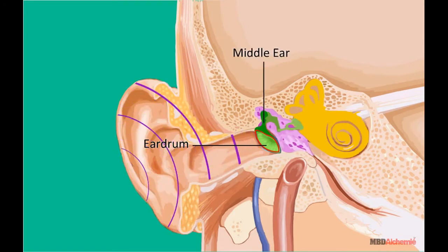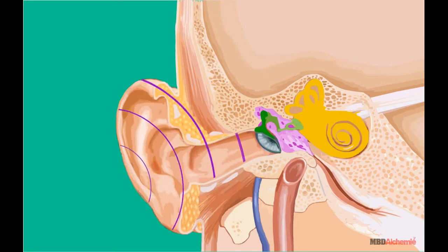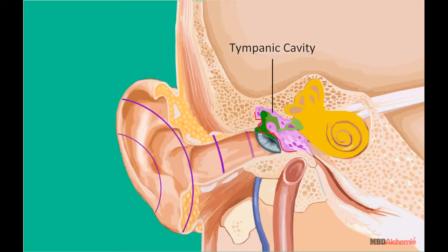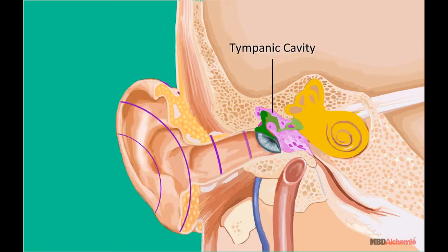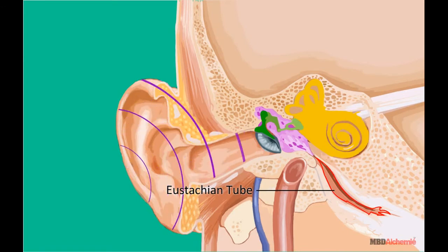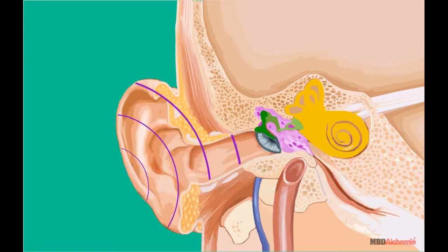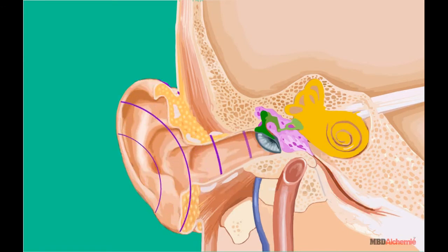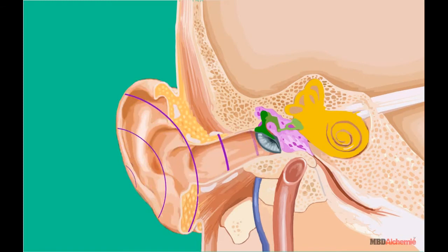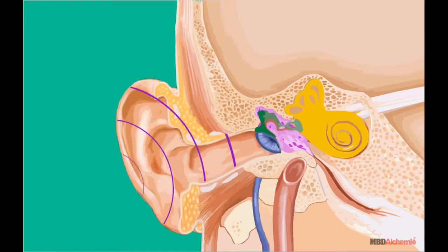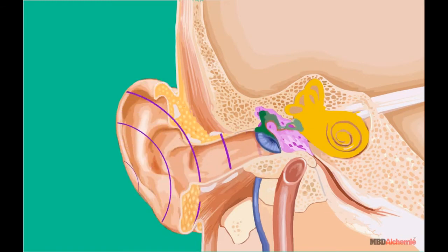The middle ear consists of an air-filled space in the temporal bone called the tympanic cavity, and a eustachian tube or auditory tube that connects each middle ear to the throat. The middle ear also consists of three small bones called auditory ossicles.